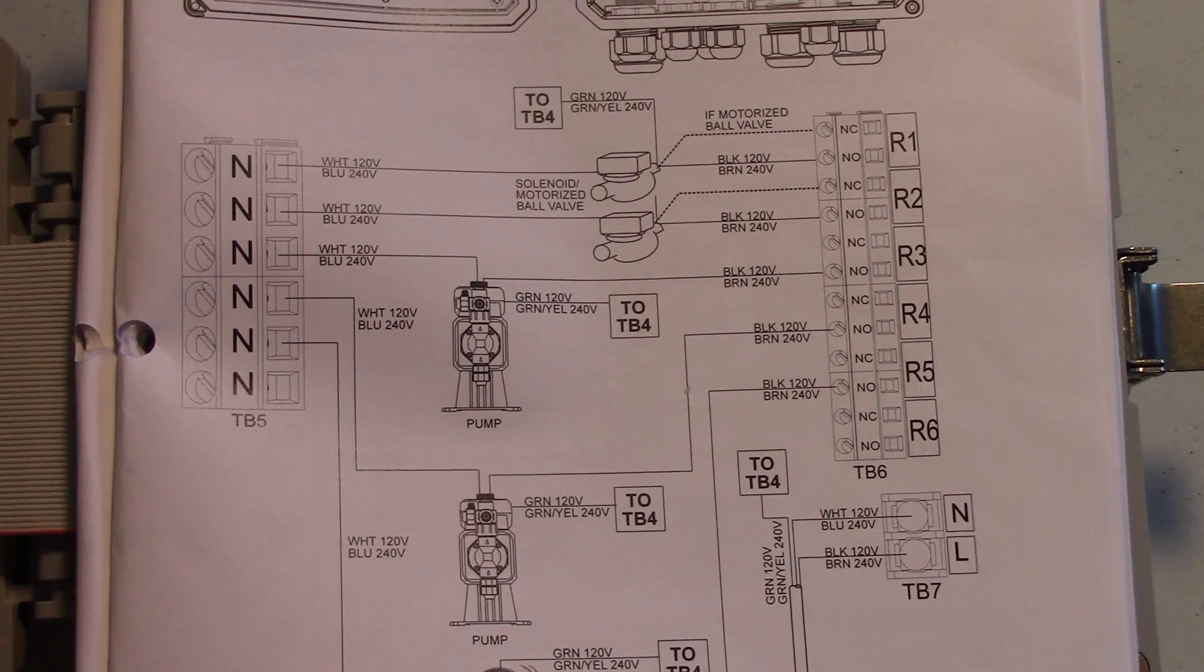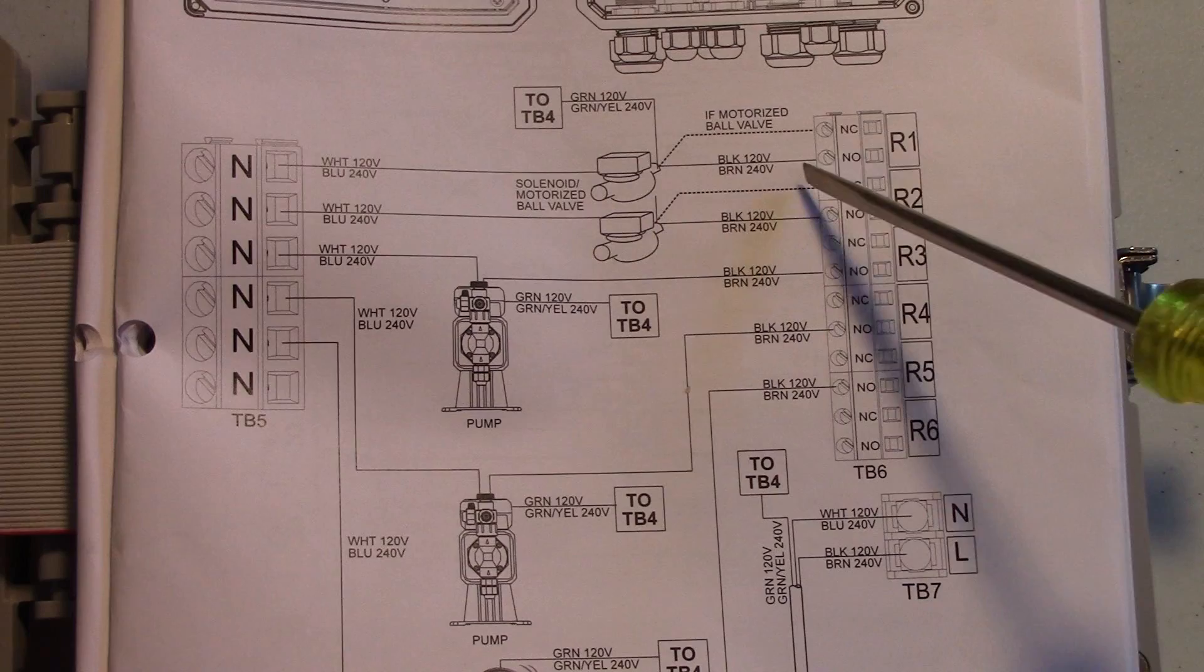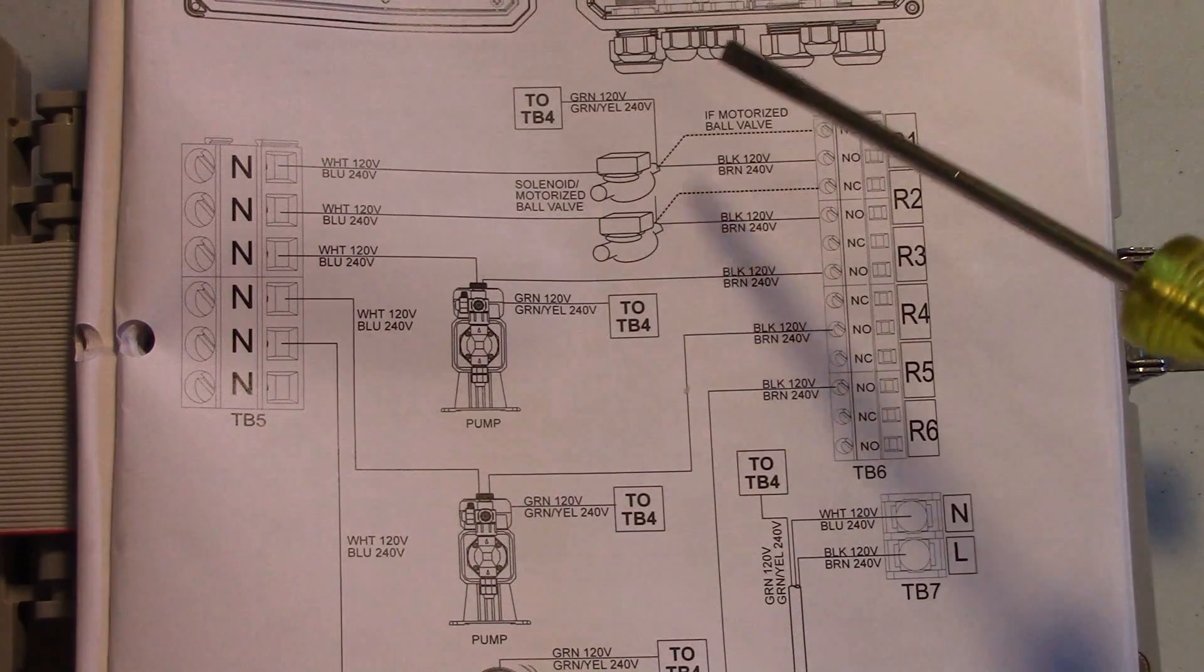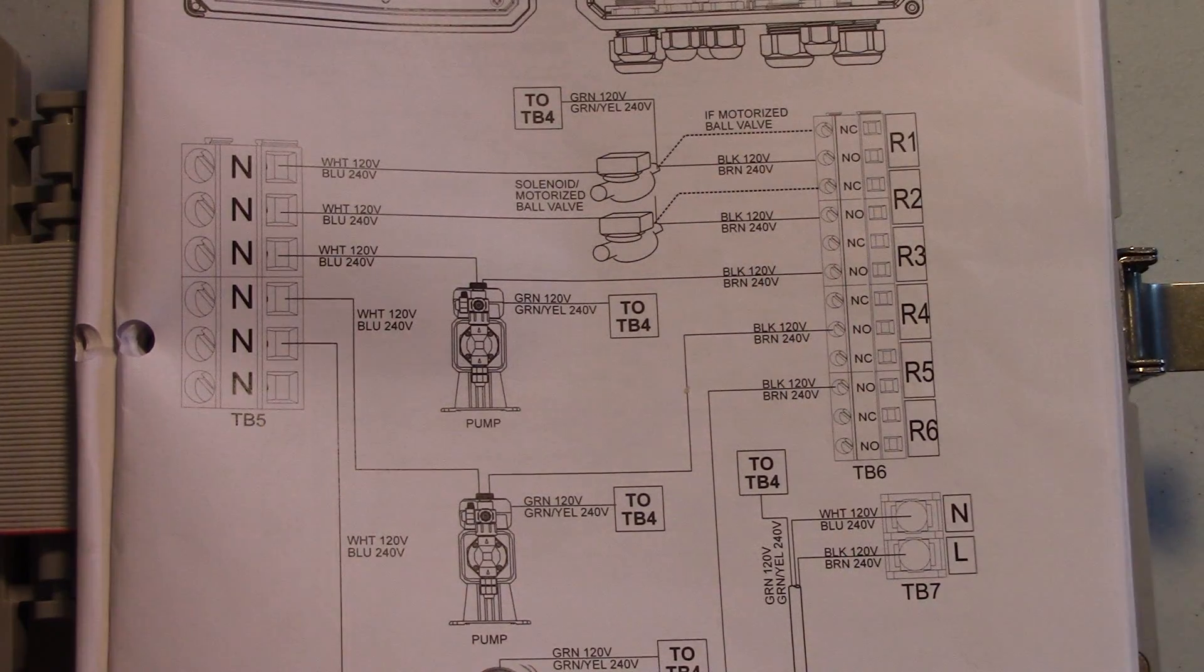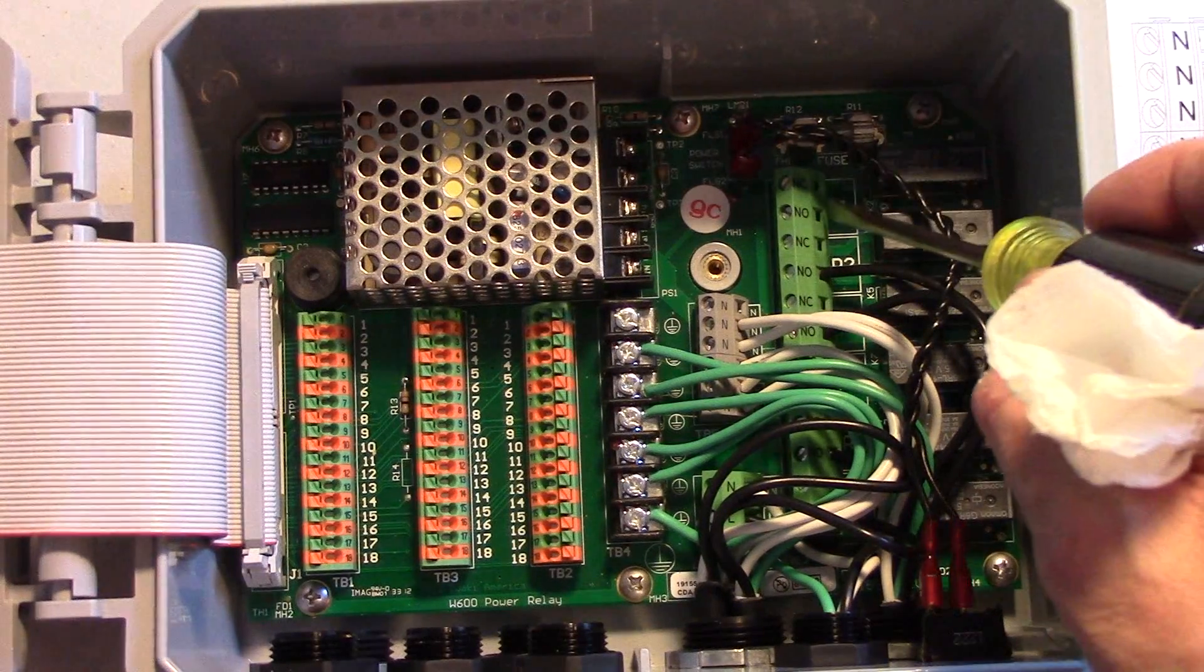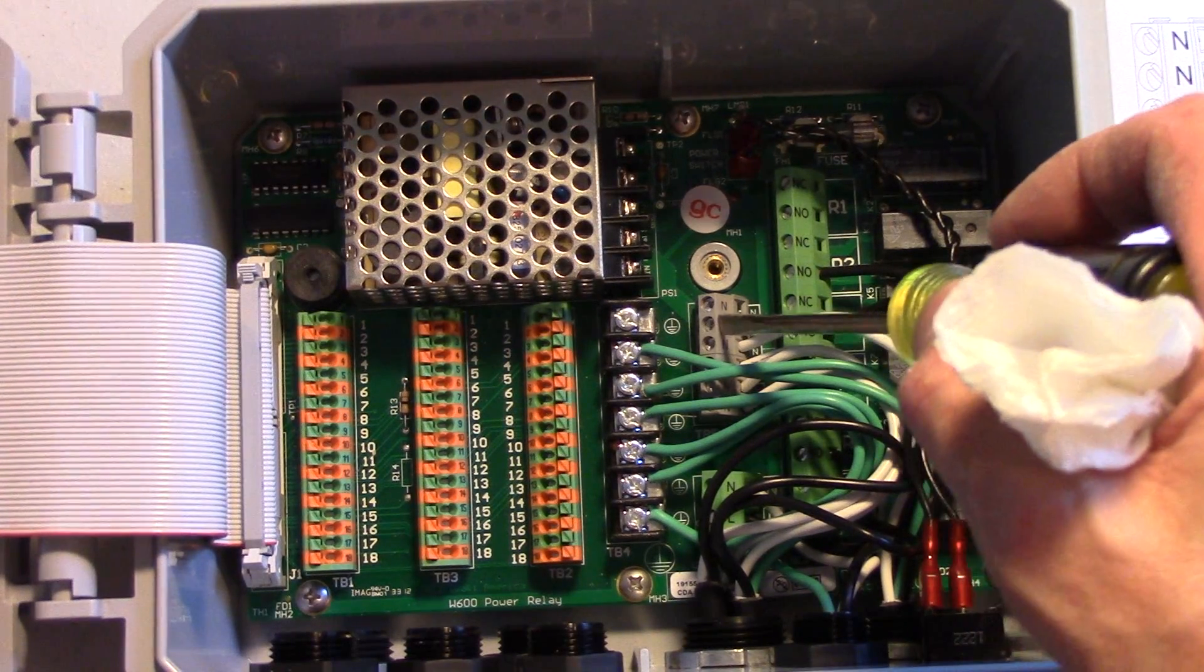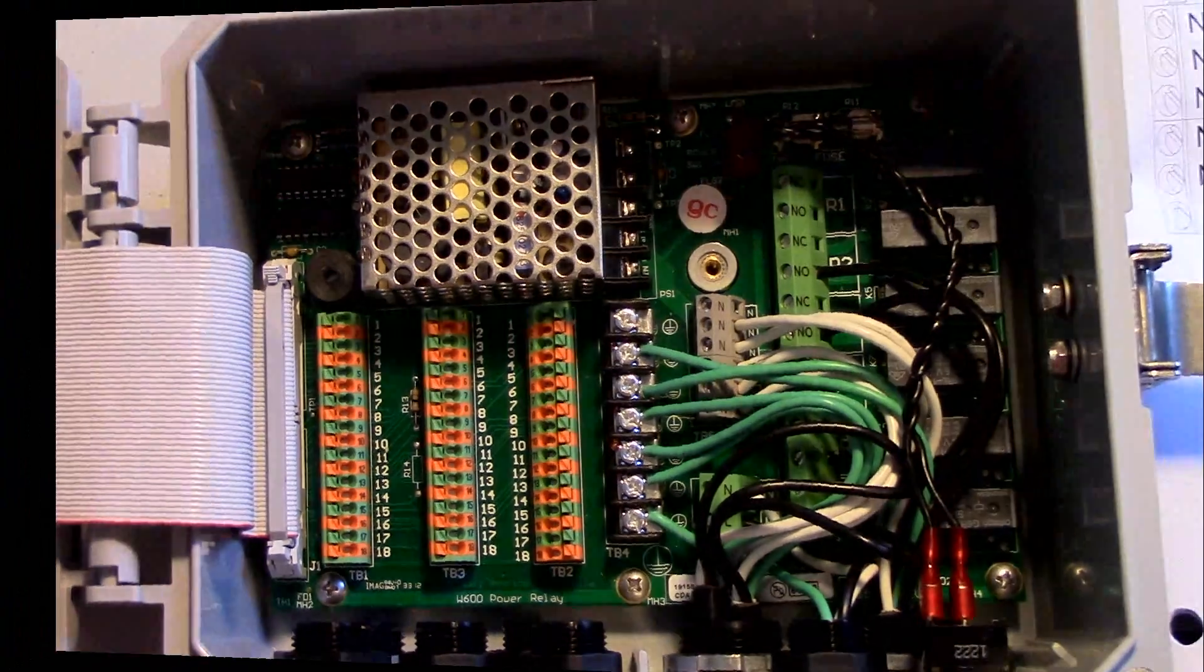Let's take a look at the wiring diagram inside the instruction book for the W600. Here's a solenoid valve. You have one wire going to R1 on normally open, another wire going to the neutral on TB5, and then if there's a ground, it'll go to TB4. Inside the controller, you'll see R1 on the normally open. This is TB5 where the other wire goes, and the ground goes on TB4. So let's wire it up.